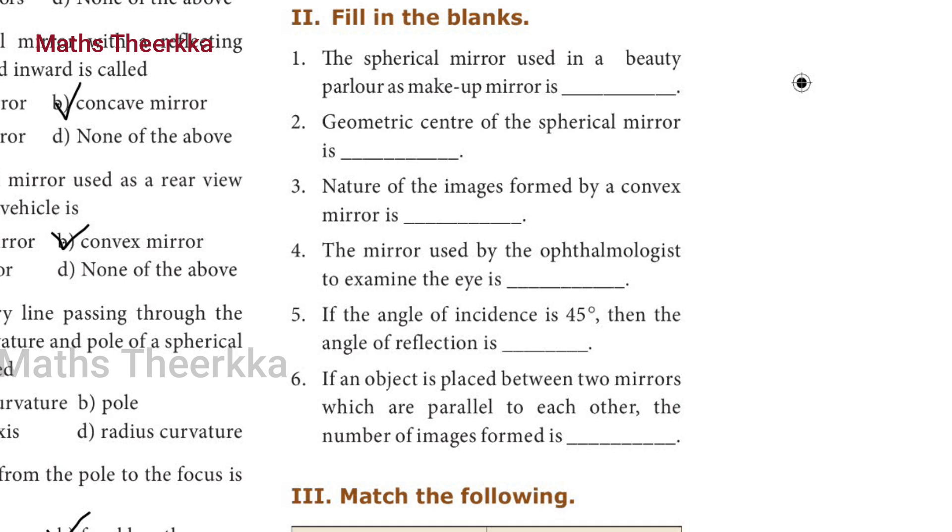Fourth question: the mirror used by the ophthalmologist to examine the eye is? Answer: concave mirror. Fifth question: if the angle of incidence is 45 degrees, then the angle of reflection is? Answer: 45 degrees.